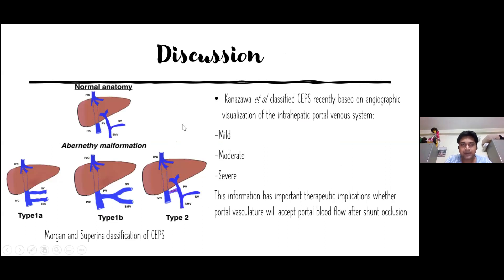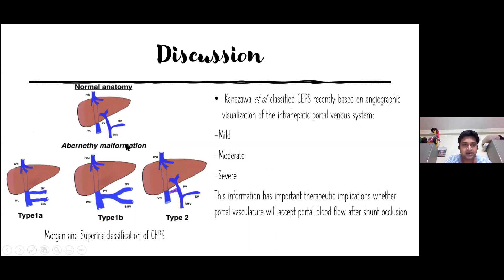A brief discussion on Abernathy malformation. Before discussing the classification, I want to highlight normal portal venous drainage: the superior mesenteric vein and splenic vein join to form the extra-hepatic portal vein, which enters the liver, divides into right and left portal branches, forms the canaliculi, and drains via the hepatic vein into the IVC. Morgan and Superina have classified Abernathy malformation into three types.